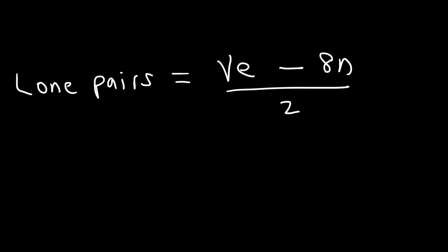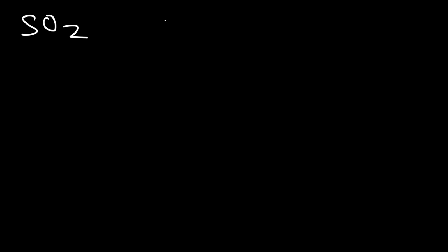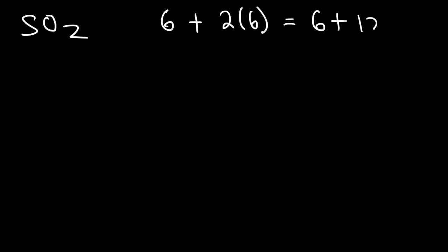The best way to learn how to use this formula is to put it into practice, so I'm going to go over a series of examples. Let's start with sulfur dioxide. The first thing we need to do is calculate the number of valence electrons. Sulfur has six valence electrons and oxygen has six, but there are two of them, so this is going to be six plus 12, which is 18 valence electrons.